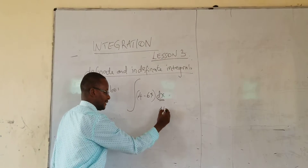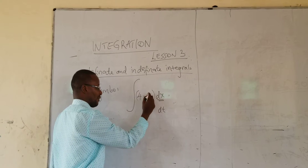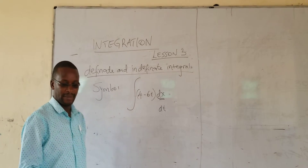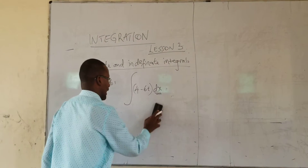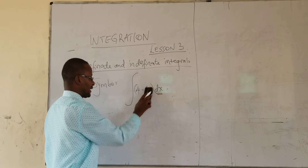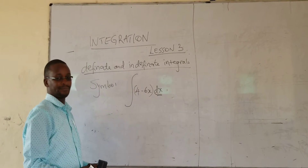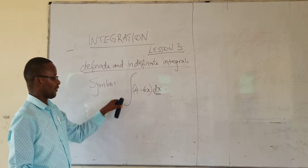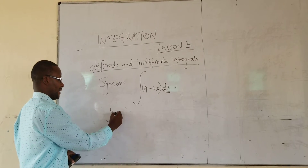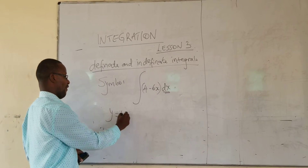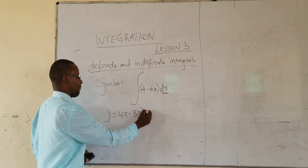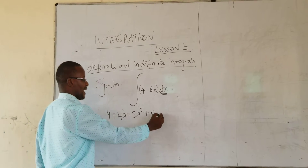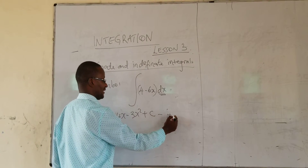So, if I put DT and the constant here was T, I would mean integrate with respect to T. But let's use X for now. We will be using T and other variables later. Now, that integration gives me an equation of Y, and Y is equal to 4X minus 3X squared plus a constant C. This one is known as indefinite integration.